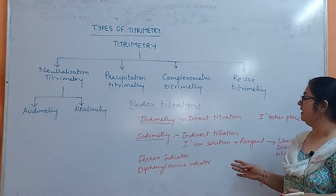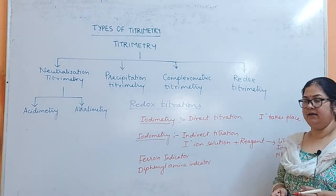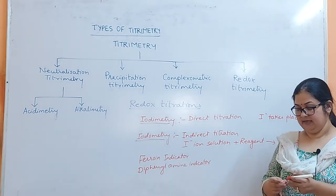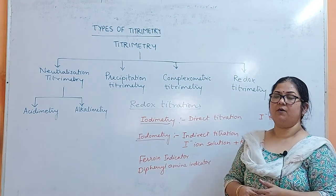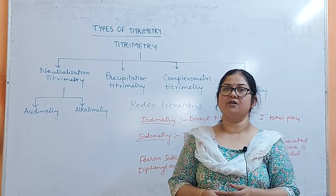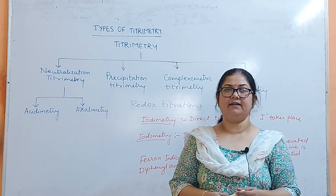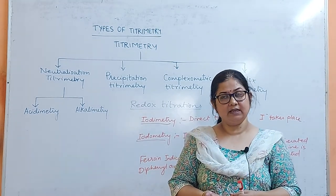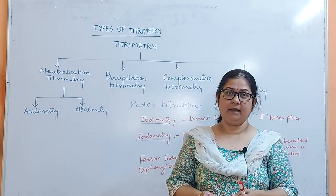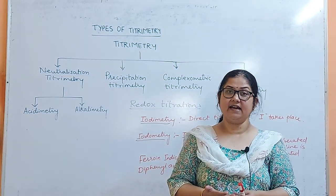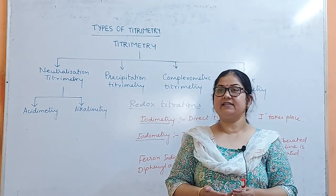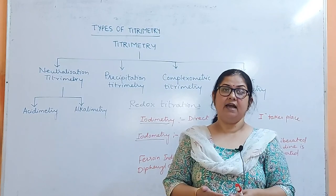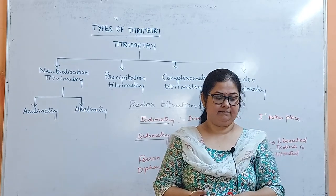This is all about the types of titrimetry — what kinds of reagents and indicators are used. In my next lecture we will see about the calibration of volumetric apparatus, because in titrimetry two major things are required: volumetric apparatus and standard solution. We will see what volumetric apparatus is used and how to calibrate it. Thank you.